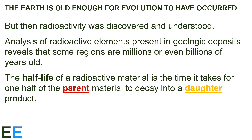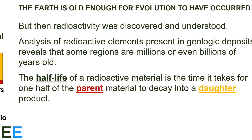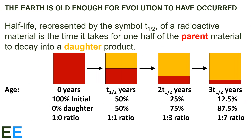Radioactive materials break down over time into less radioactive materials. The half-life of a radioactive material is the time it takes for one half of the parent material to decay into a daughter product, represented by the symbol T sub one-half. Each atom is on its own, with a certain chance of decaying over time, and the half-life measures how long it takes for half of those atoms to do so.